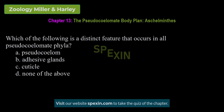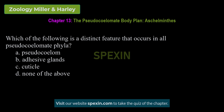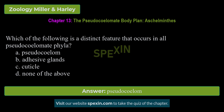Which of the following is a distinct feature that occurs in all pseudocoelomate phyla? A. Pseudocoelom. B. Adhesive glands. C. Cuticle. D. None of the above. Correct answer: Pseudocoelom.